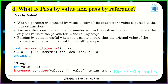What is pass by value and pass by reference? Pass by value: when a parameter is passed by value, a copy of the parameter's value is passed to the task or function. Any modifications made to the parameter within the task or function do not affect the original value in the calling scope. Passing by value is useful when you want to ensure that the original value remains unchanged.